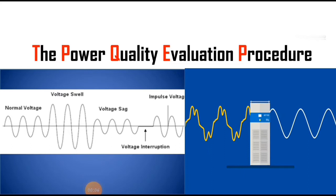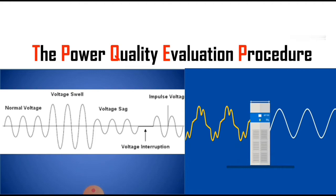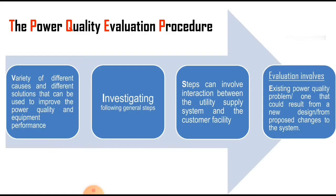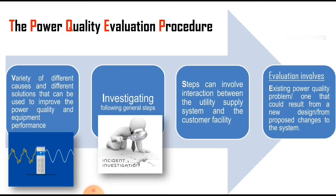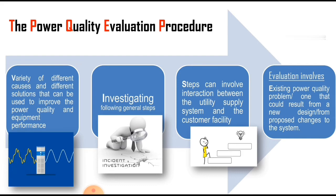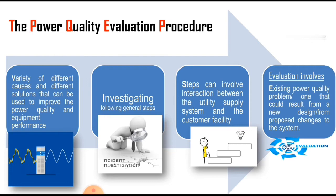In this video I am explaining the concept of the power quality evaluation processor. This processor is based on four steps: identifying the variety of different causes and solutions to improve power quality and equipment performance; following general investigative steps; interaction between the utility supply system and customer facilities; and evaluating existing power quality problems or those that could result from a new design or proposed changes to the system.